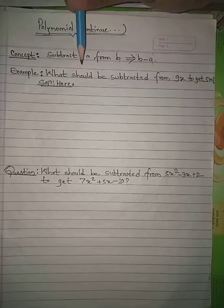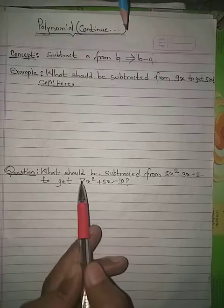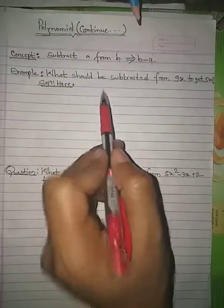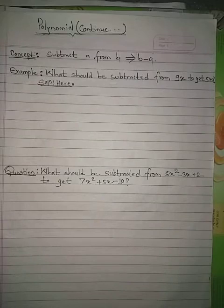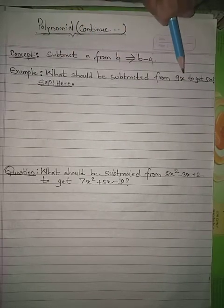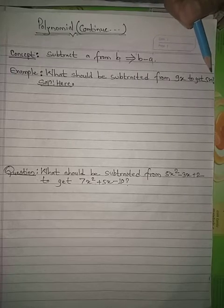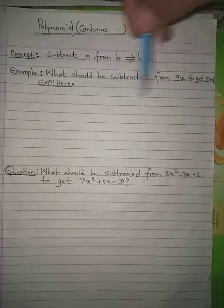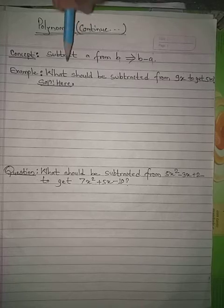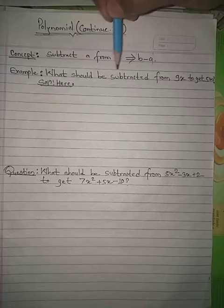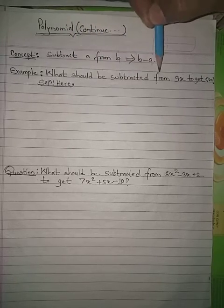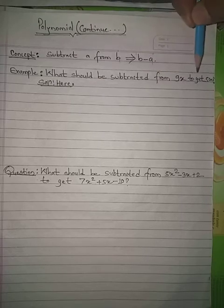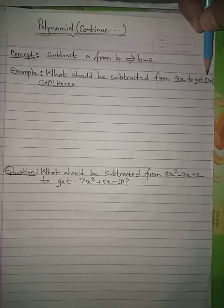Let us do one simple example, and only then we'll solve the main problem with the help of this example. The question is: what should be subtracted from 9x to get 5x? Understand this question like this: how many apples must be subtracted from 9 apples to get 5 apples?